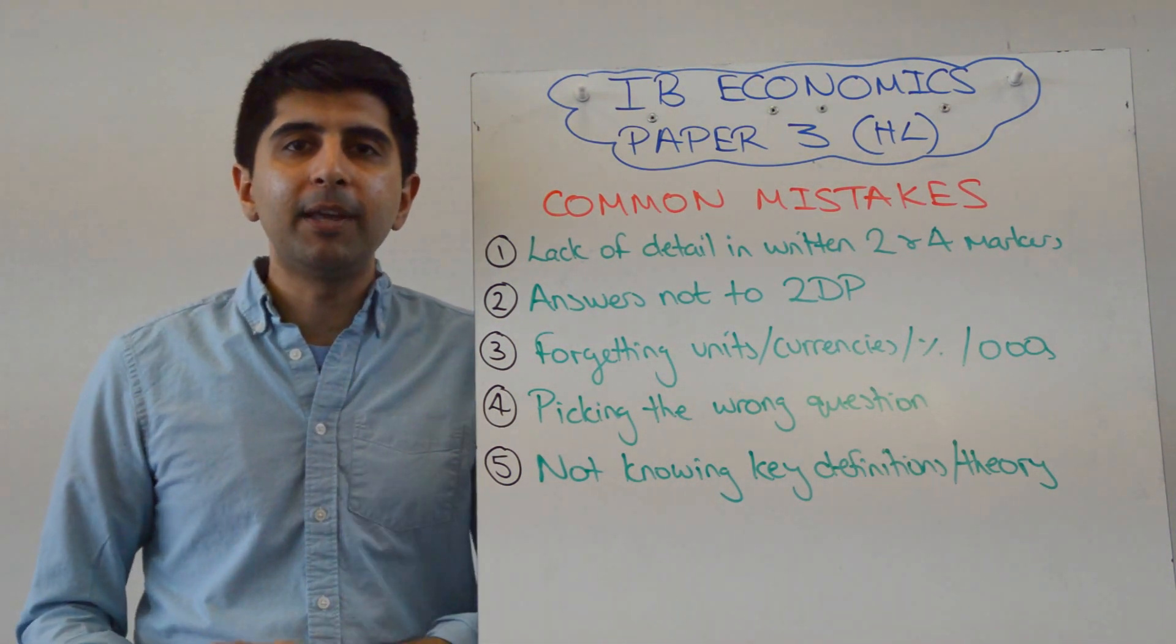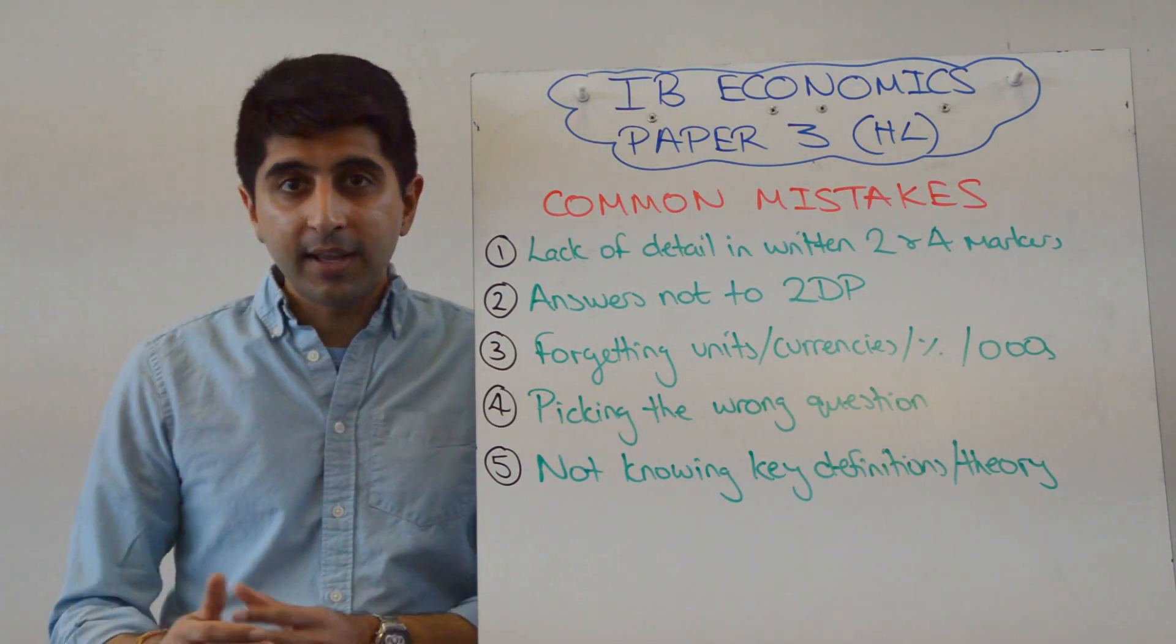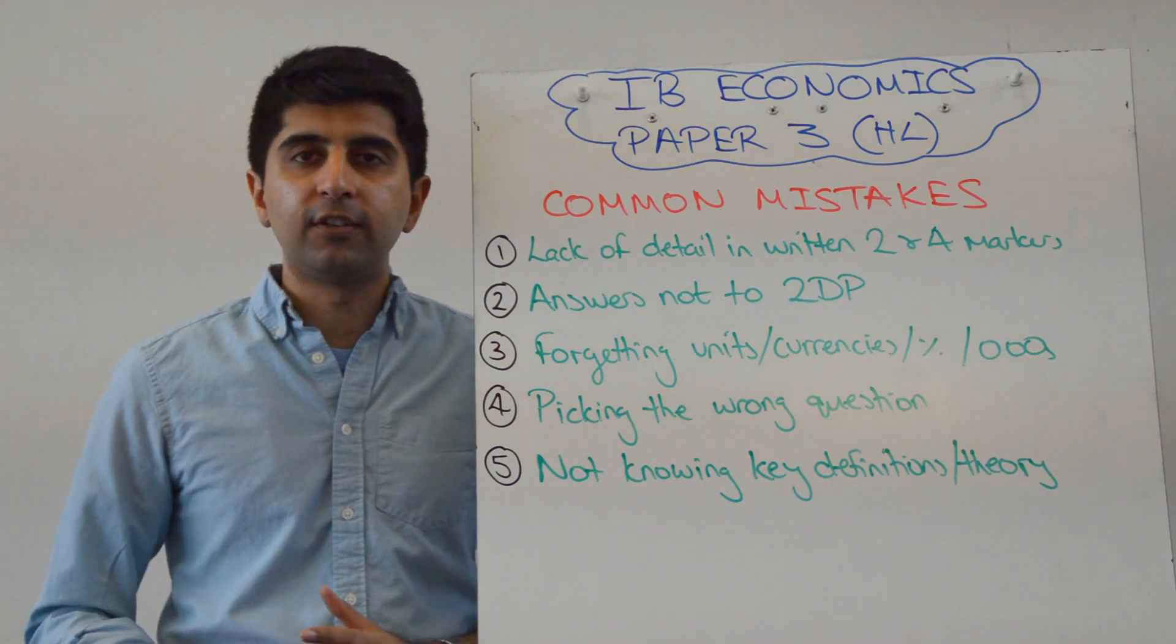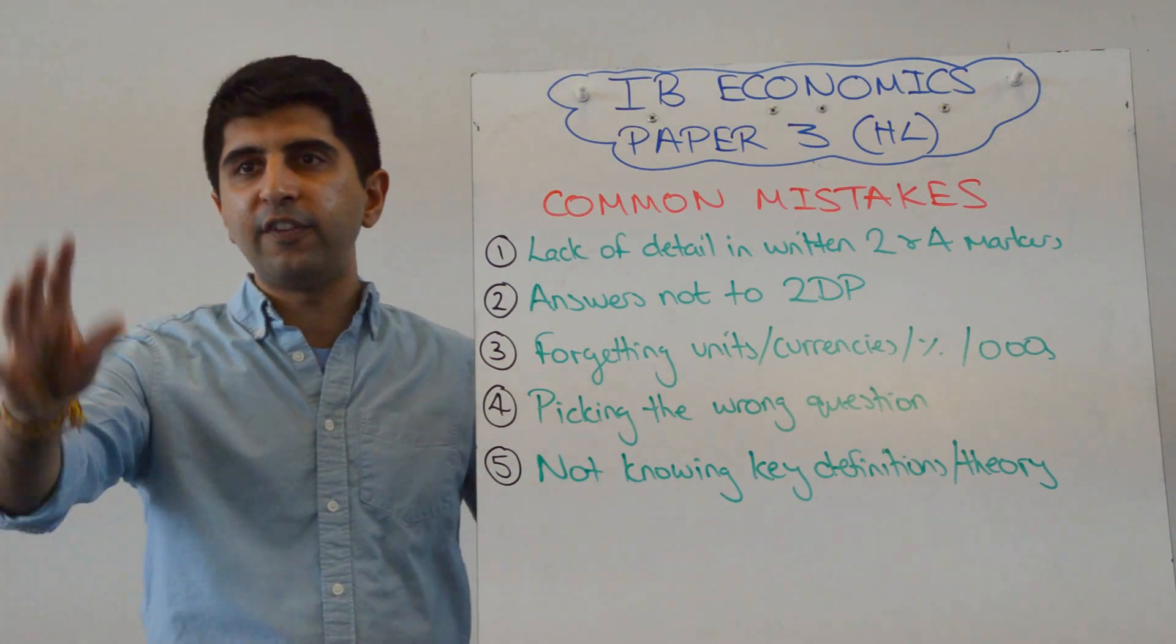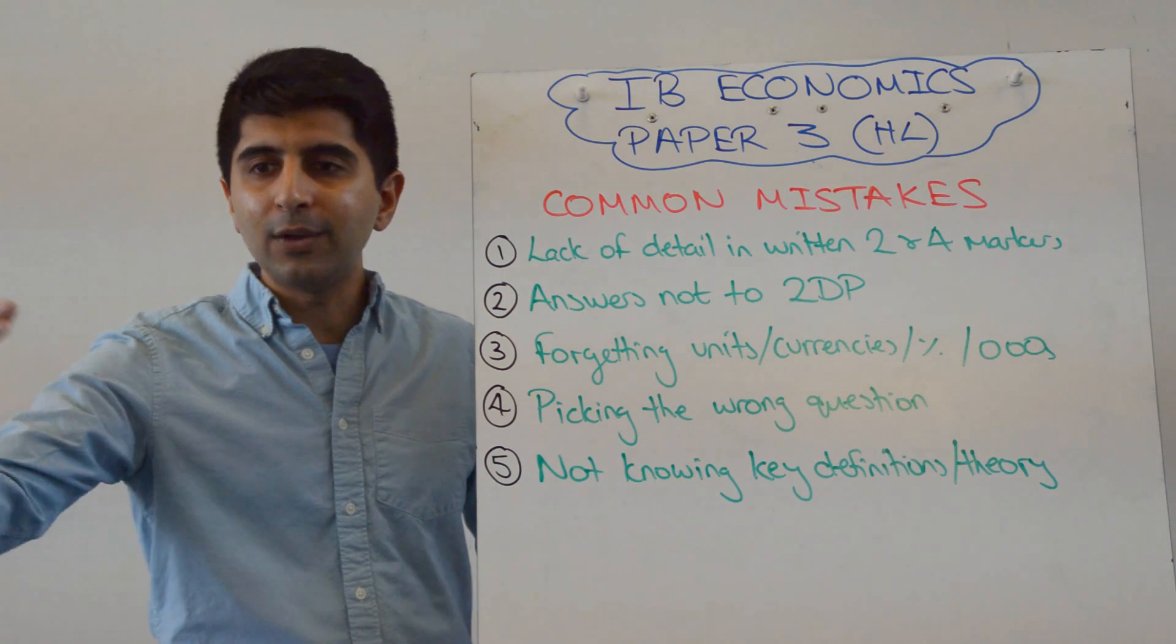Picking the wrong question is another big mistake. A lot of students - that 5 minutes reading time in Paper 3 is a long time, very useful time for you to go through every part of the question so that you pick the right 2 questions. But so many students often see that the first page is something they like, they find easy, they then just go for it, not seeing what else is there.